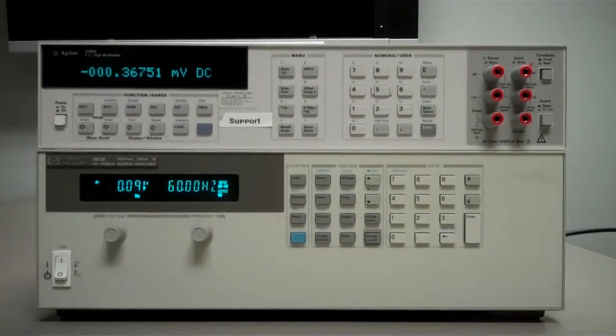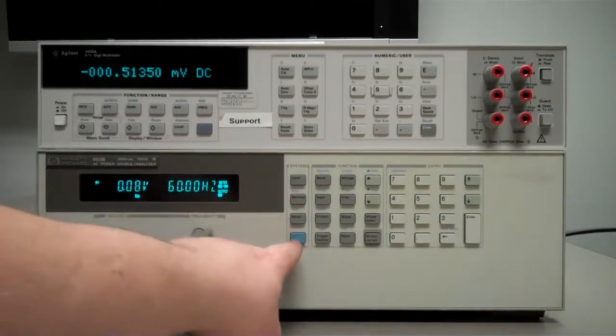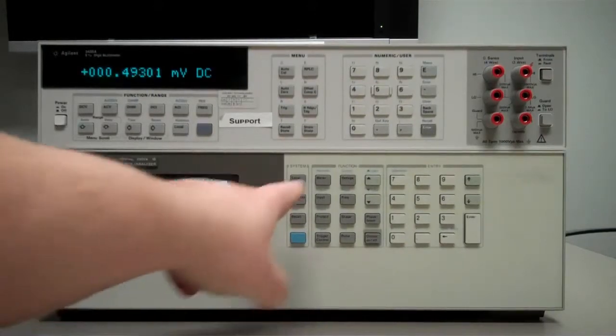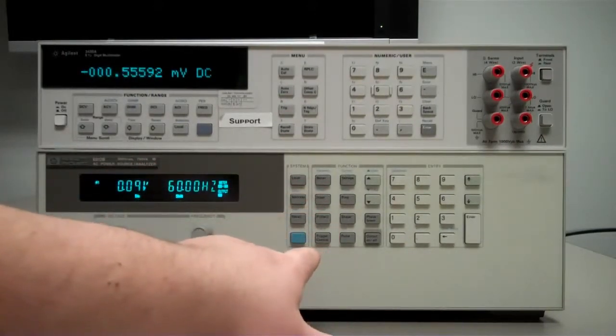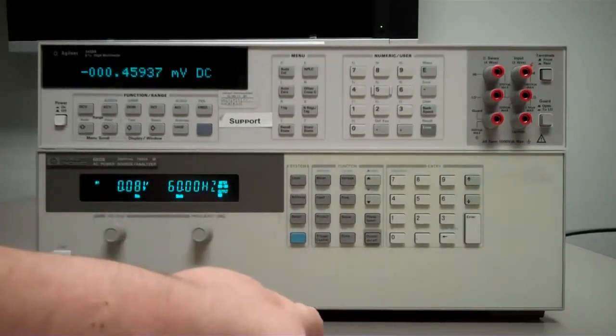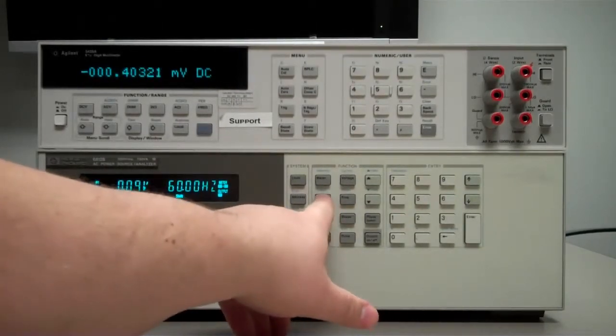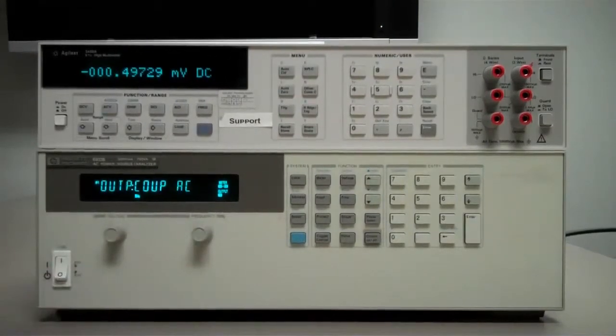My AC source is on and ready to go. The first thing we're going to do is hit this blue shift key here and then hit the input button. If you look above the input button, it says output and we want to access that output menu. So we're going to hit this input button and that brings up the output menu.